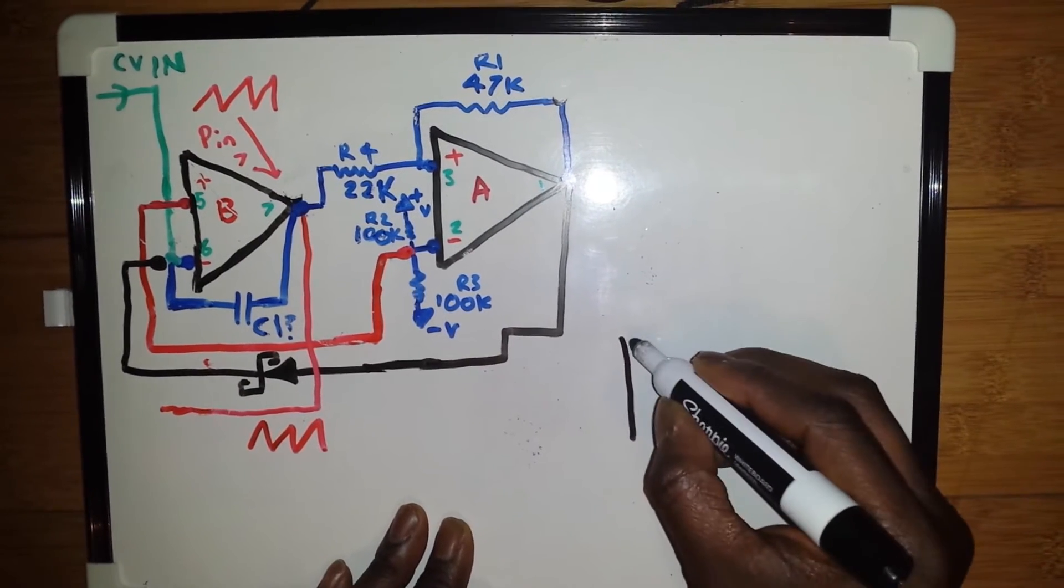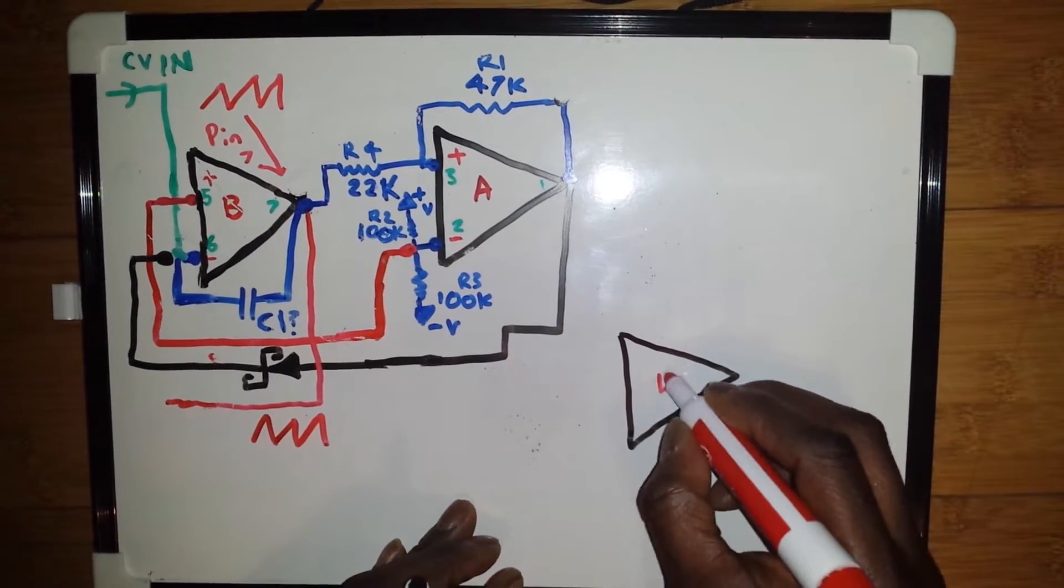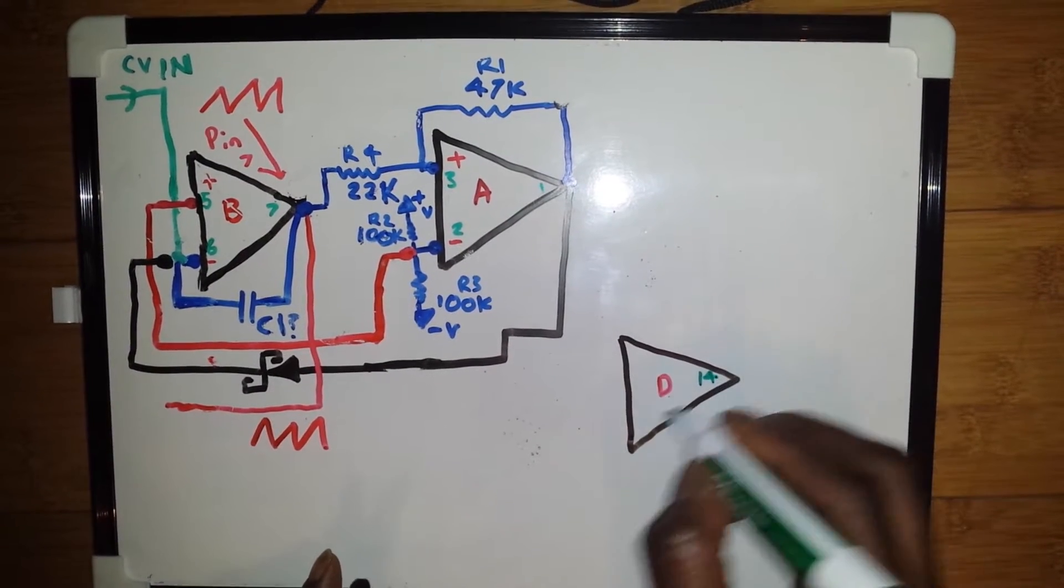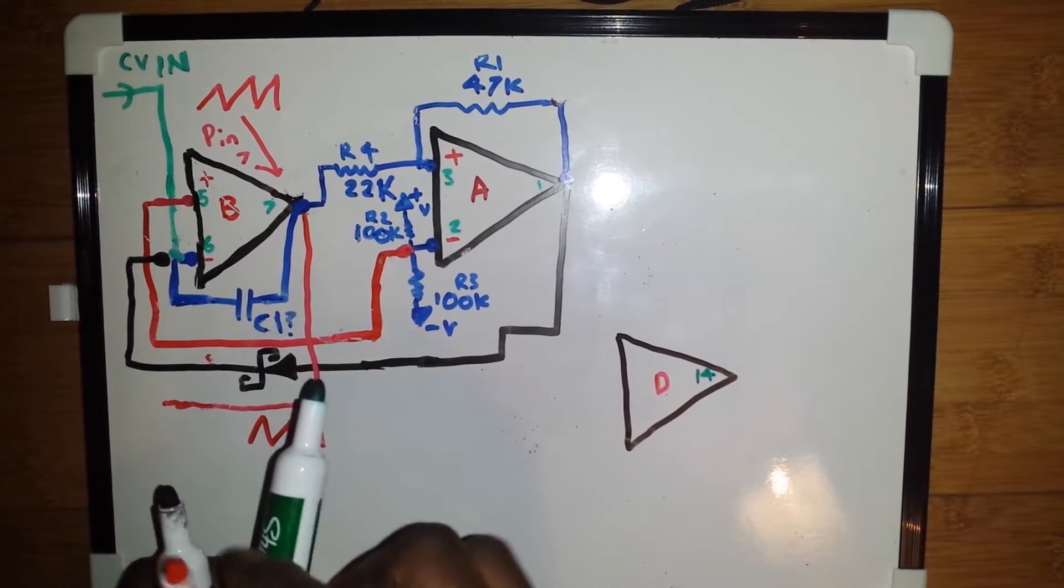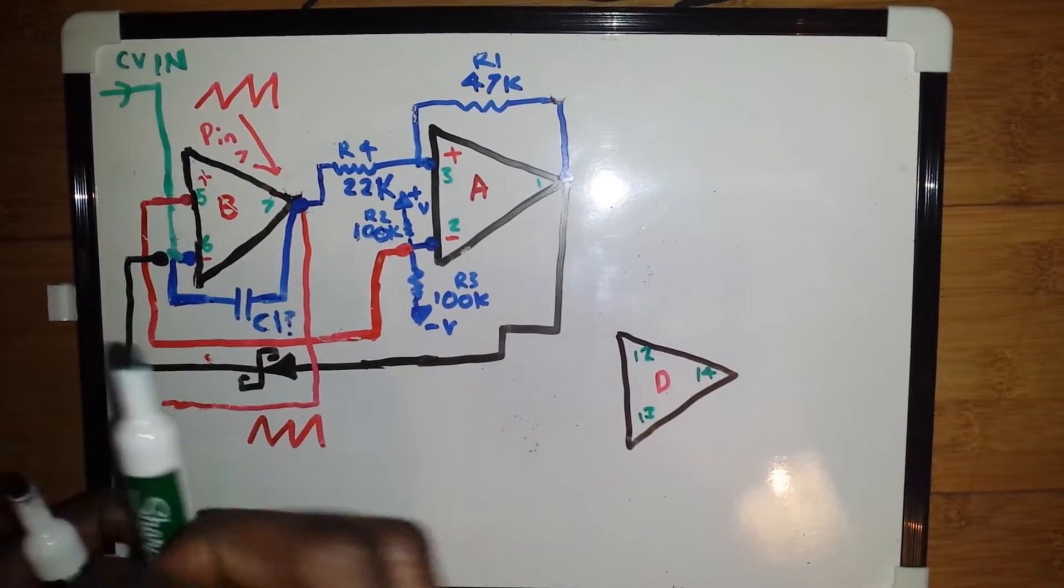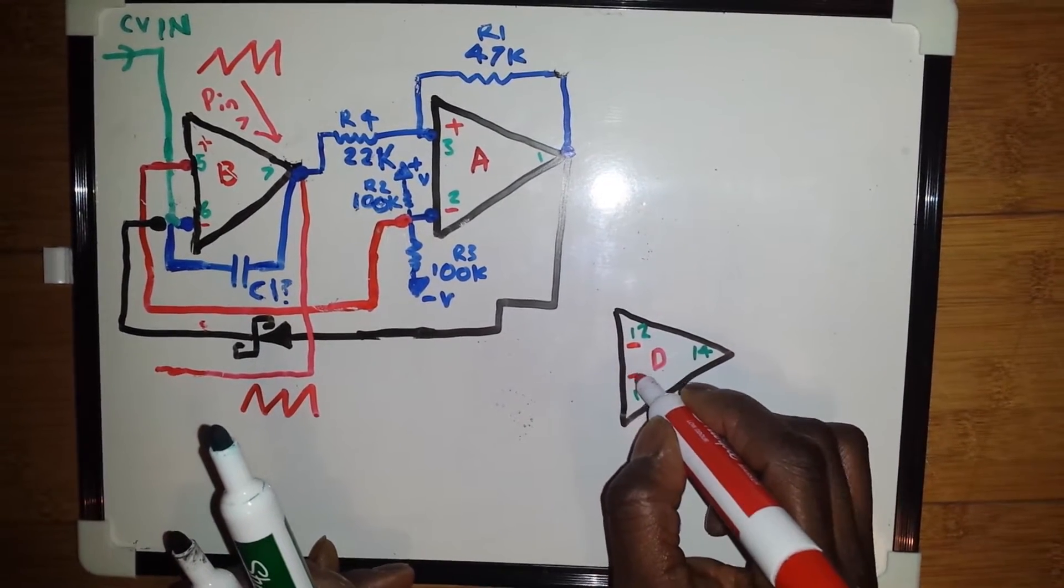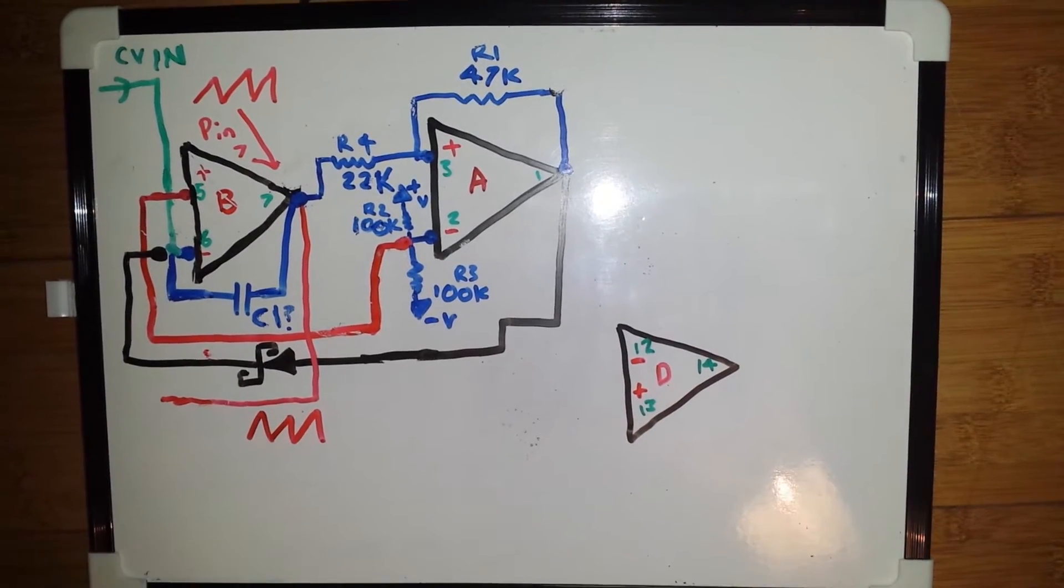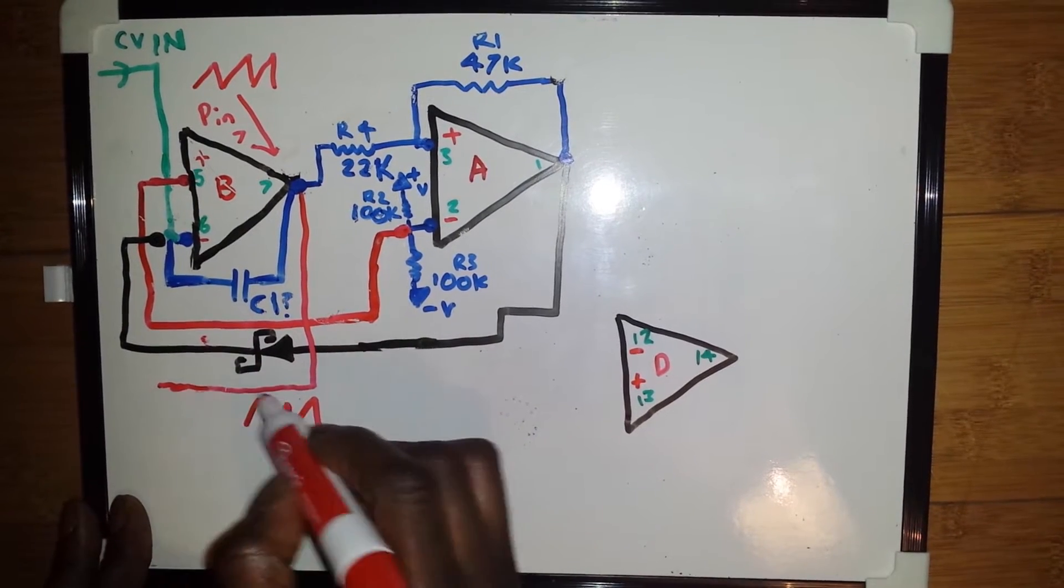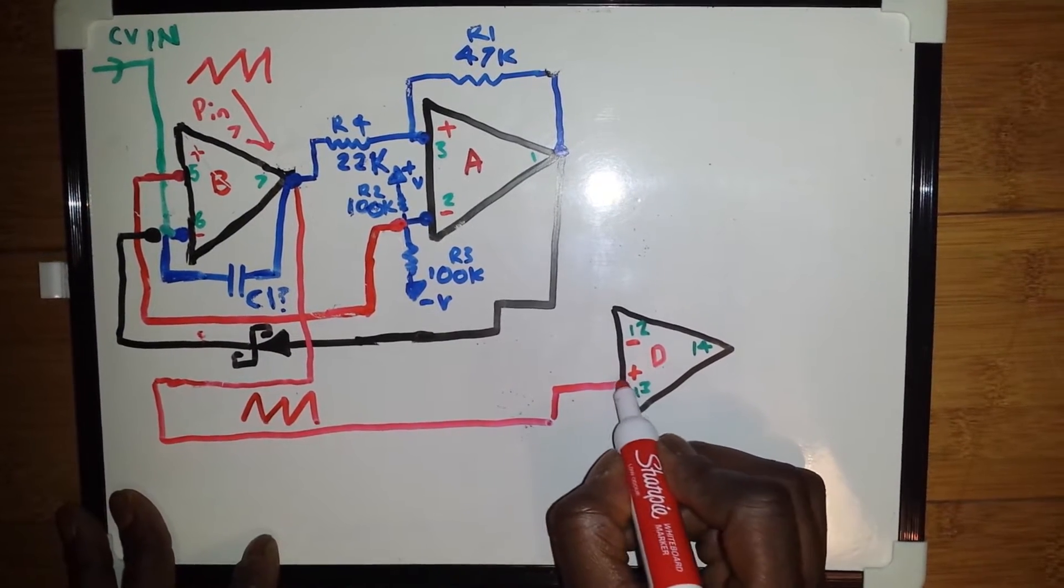Now what we have is our next op amp which I'm going to call D. On D we will have pin 14 and we will have pin 12 and pin 13. Inverting input, non-inverting input. Now this is our saw out from pin 7 as we talked about in the last video. What we need to do is take a cable or jump around from there and pop that into pin 13.